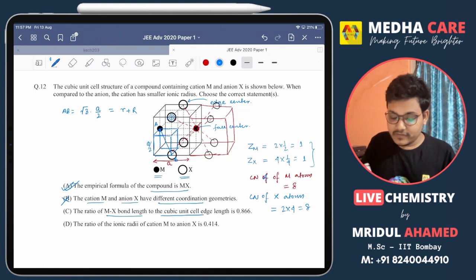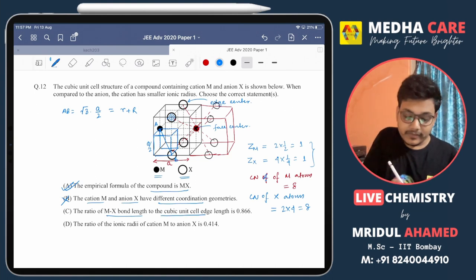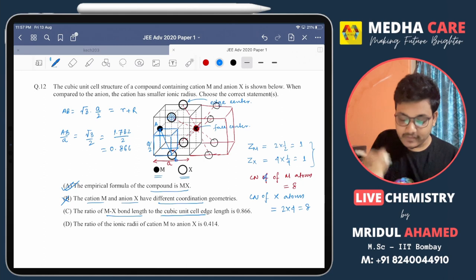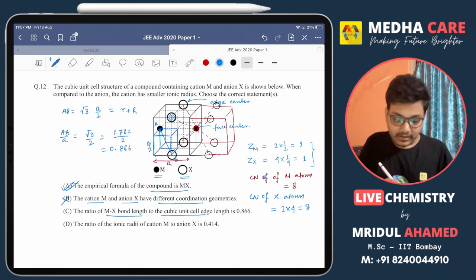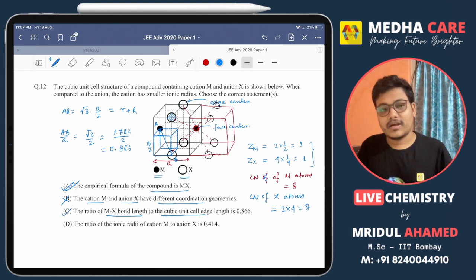The unit cell edge length is a, so the ratio will be AB by a. So that will be root 3 by 2, that is 1.732 by 2, that is 0.866. So we can see that option C is the correct option.